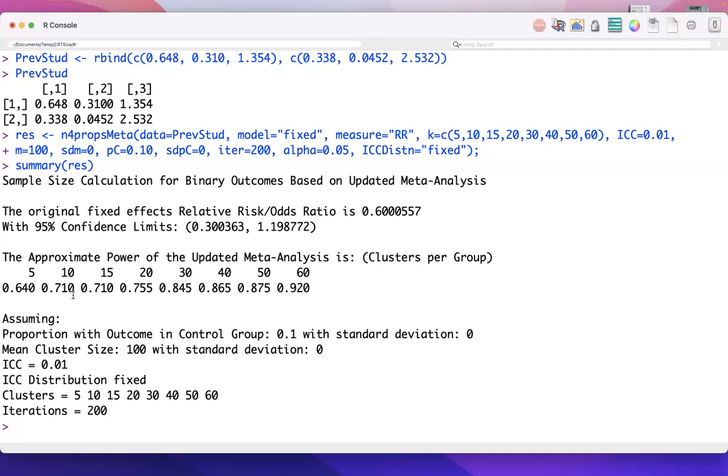So, just from this example here, we see that from 10 to 15, it actually produced the exact same estimate of the approximate power. So, that's simply due to sampling variation. But based on these results, we could see that randomizing approximately 25 clusters per intervention group would likely provide roughly 80% power here.